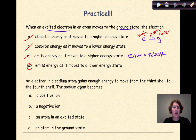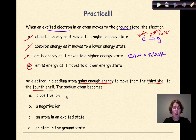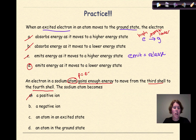Let's look at the second question: An electron in a sodium atom gains enough energy to move from the third shell to the fourth shell. The sodium atom becomes A) a positive ion, B) a negative ion, C) an atom in the excited state, or D) an atom in the ground state. We're not losing any electrons here — we're just moving an electron from a lower energy state to a higher energy state, so we're dealing with atoms, meaning protons equal electrons, therefore we're not making any ions — A and B are out. We're going from the third shell to the fourth shell, moving away from the nucleus, so the correct answer is C: an atom in the excited state, because the electron is becoming more excited as it gains more energy.